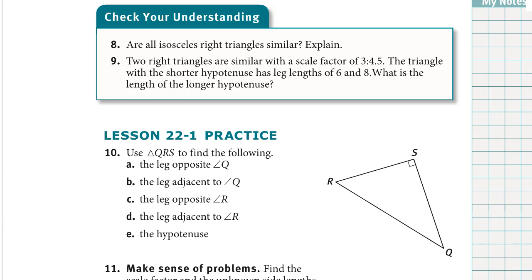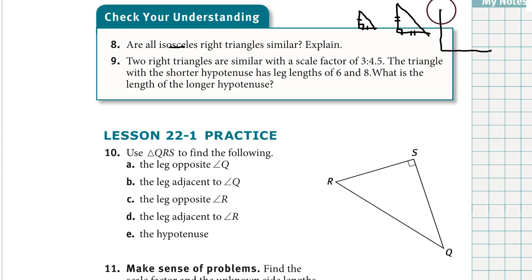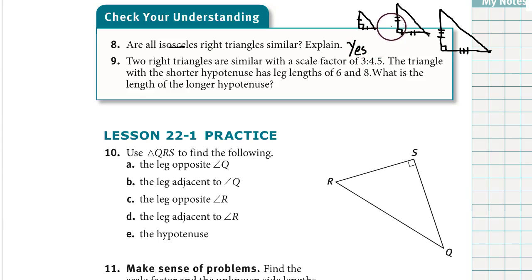Let's do the check your understanding questions. Number 8: are all isosceles right triangles similar, yes or no? An isosceles right triangle is a right triangle that has two congruent legs. Drawing several isosceles right triangles of different sizes, they are all the same shape — yes, they are similar. The reason is one of the postulates from first semester called the side-angle-side similarity postulate.